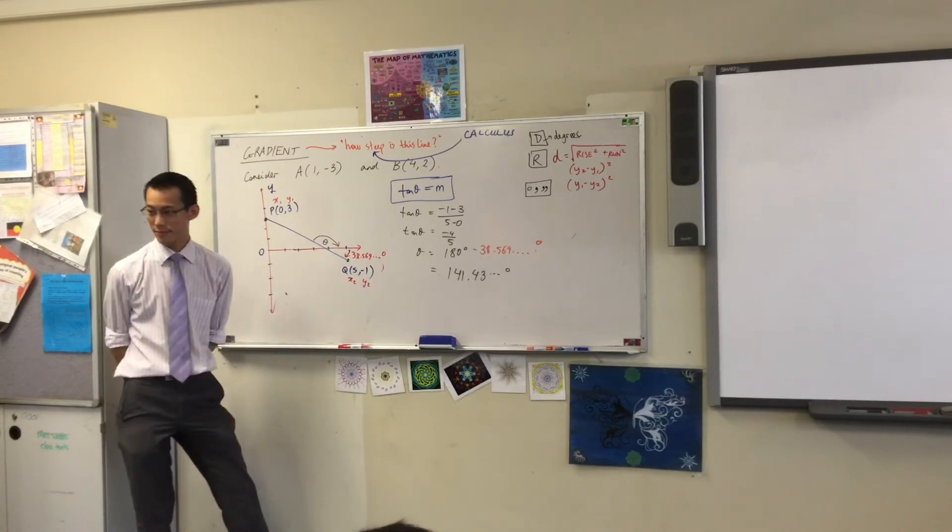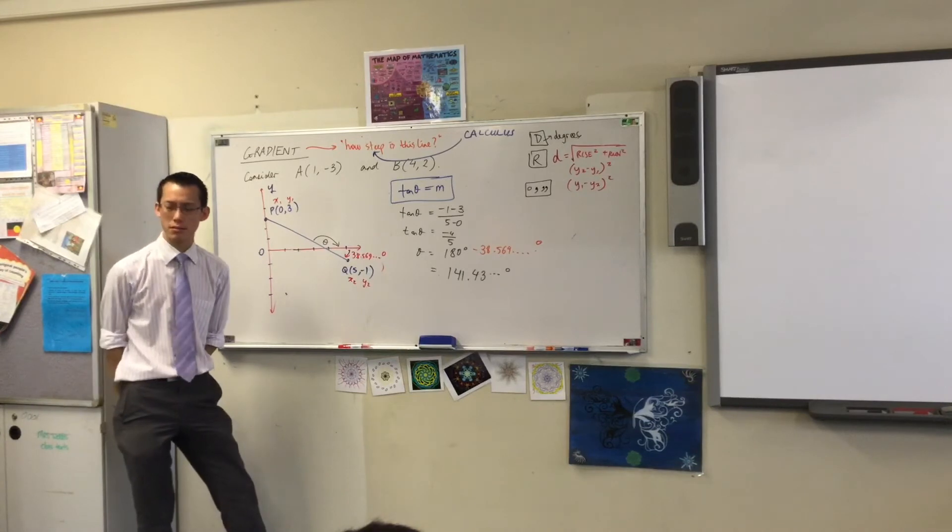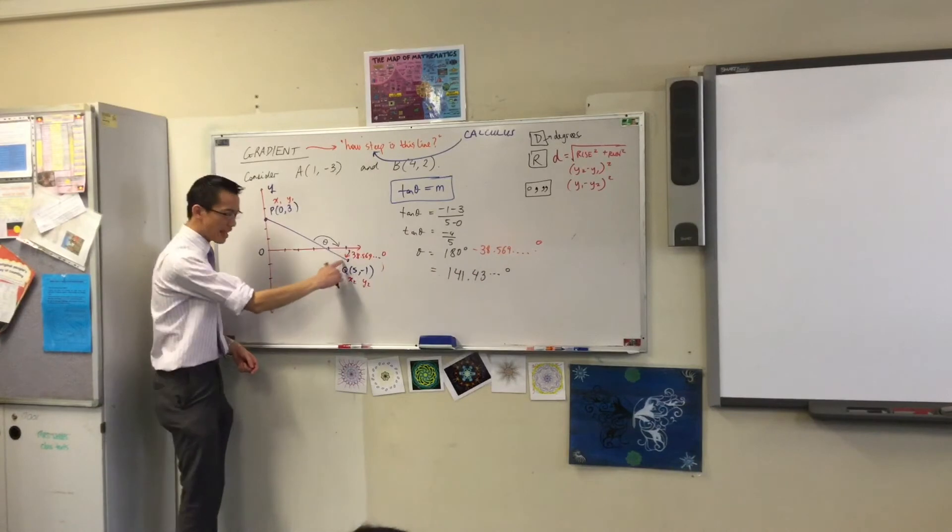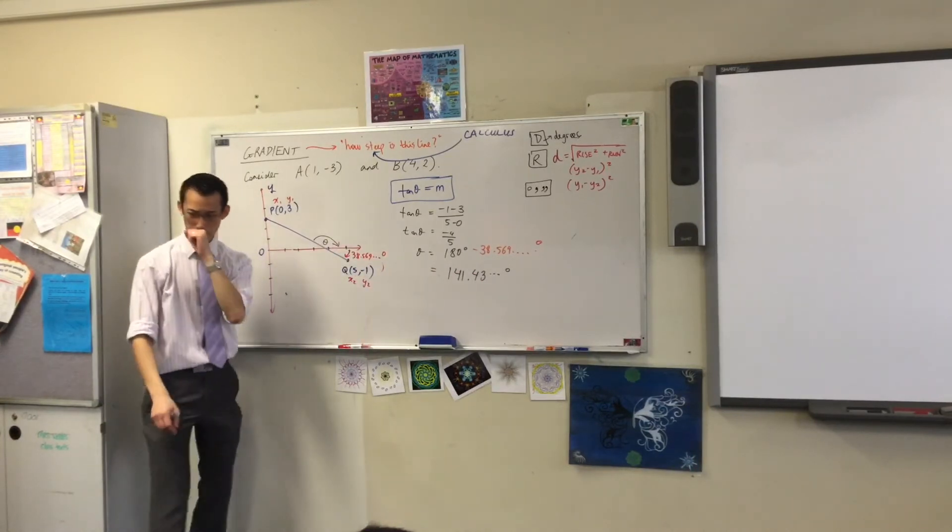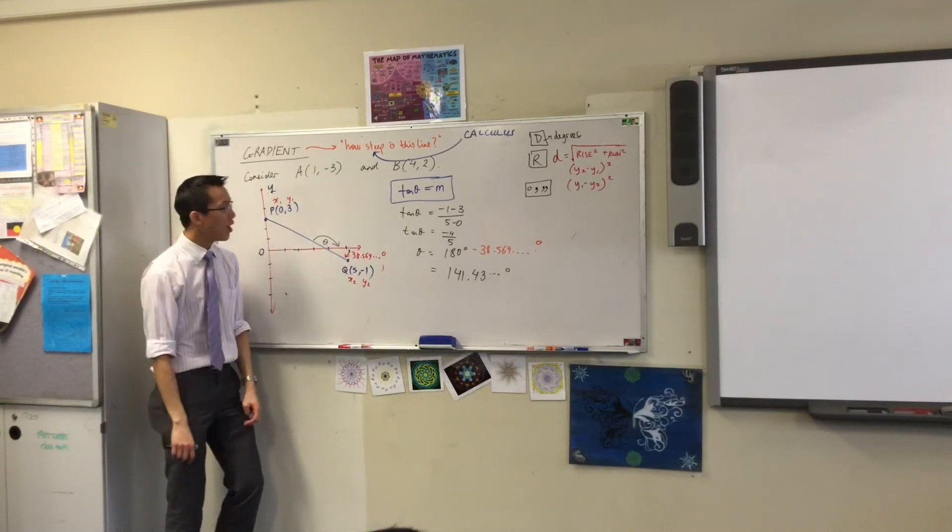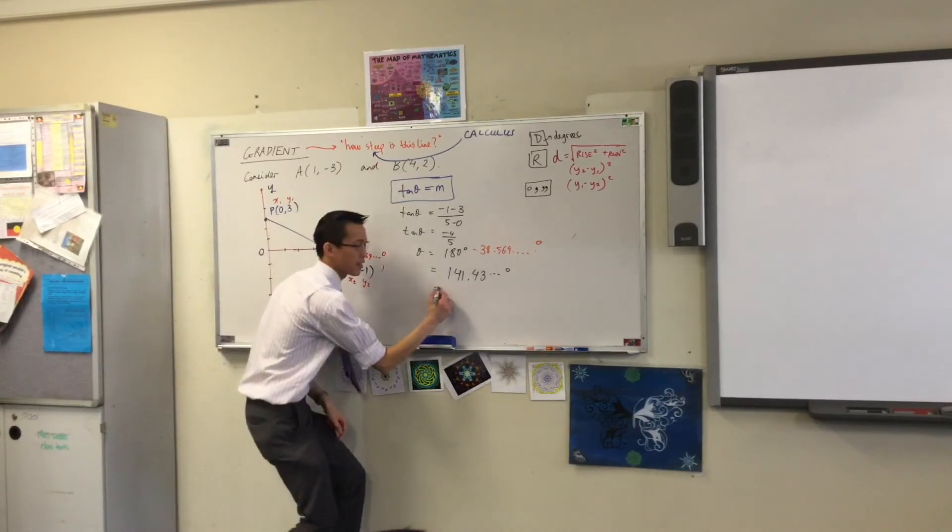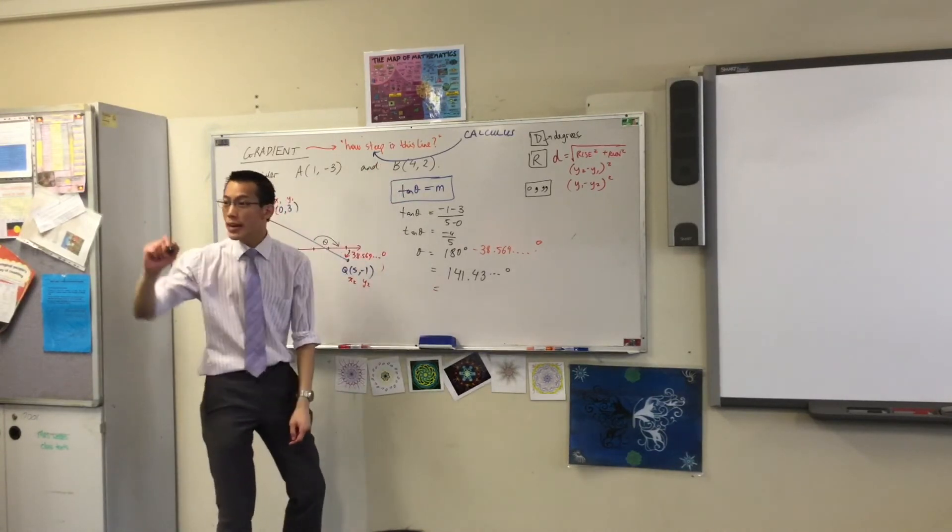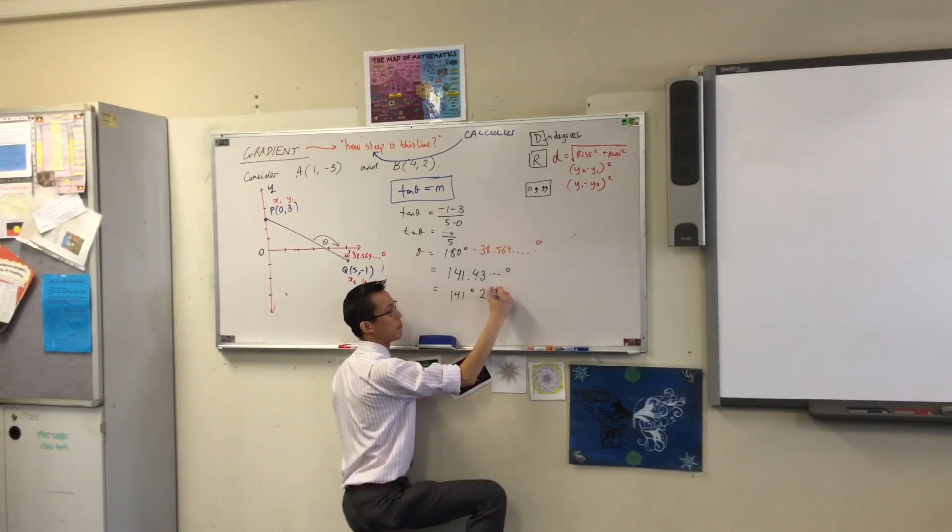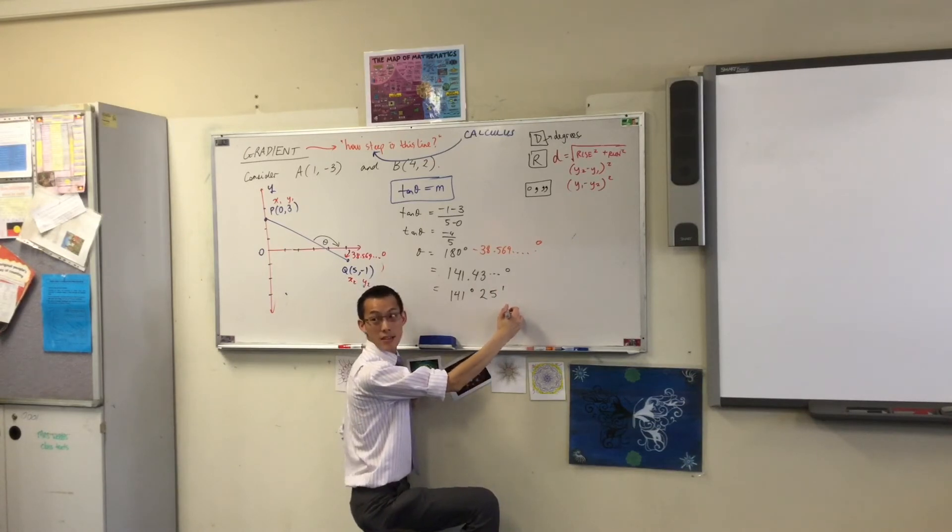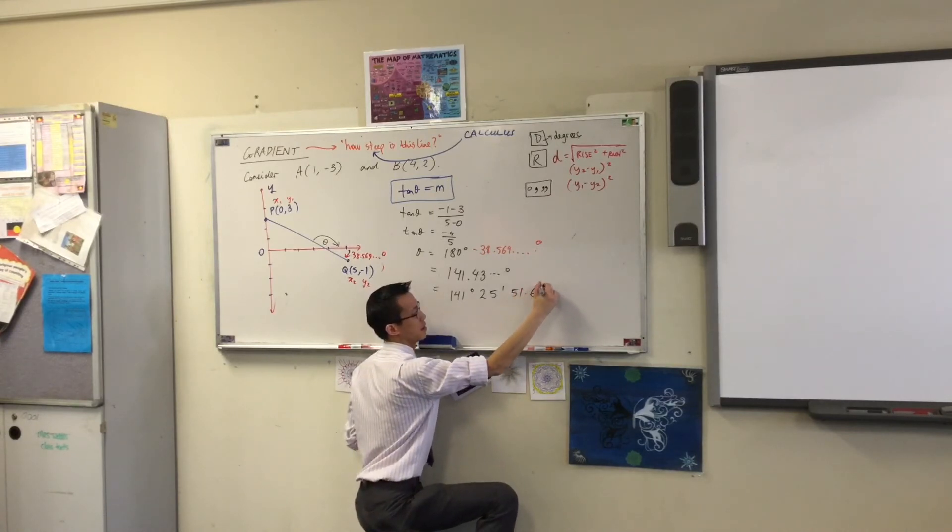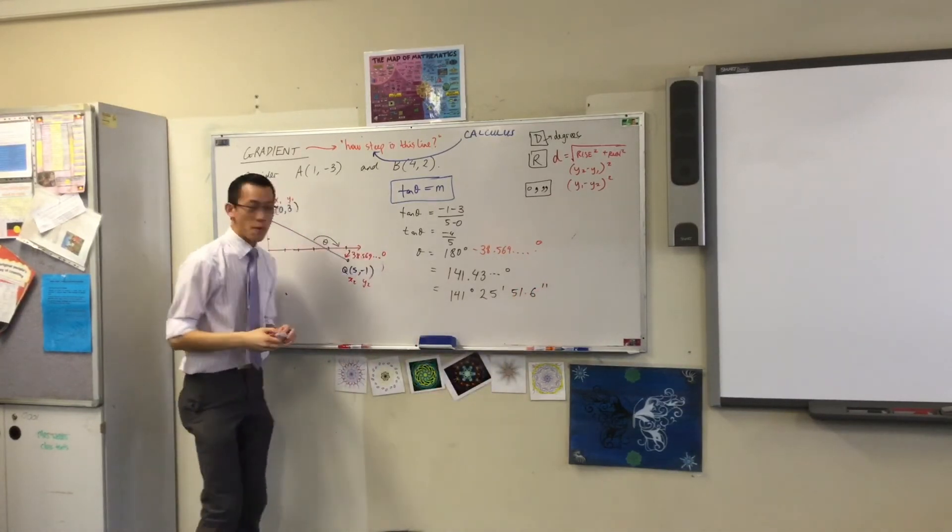Well this angle here is 38.569 degrees, but the angle I want is 180 minus that, so I'm just going to leave it like that. Has someone pressed degrees minutes seconds and got something out? The entire display for me? Yeah, 25 minutes and then seconds 51.6. Okay, now I'm writing out the whole thing.